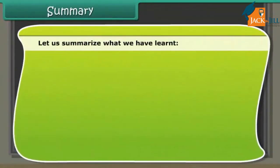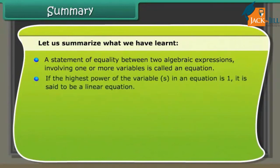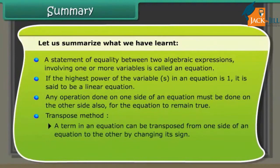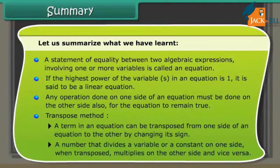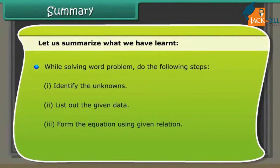Summary: a statement of equality between two algebraic expressions involving one or more variables is called an equation. If the highest power of the variables is 1, it is a linear equation. Any operation done on one side must be done on the other side to keep the equation true. Transpose method: a term can be transposed by changing its sign; a divisor becomes a multiplier when transposed. When solving word problems: identify the unknowns, list the given data, form the equation using the given relation, then find the unknown by solving the equation.